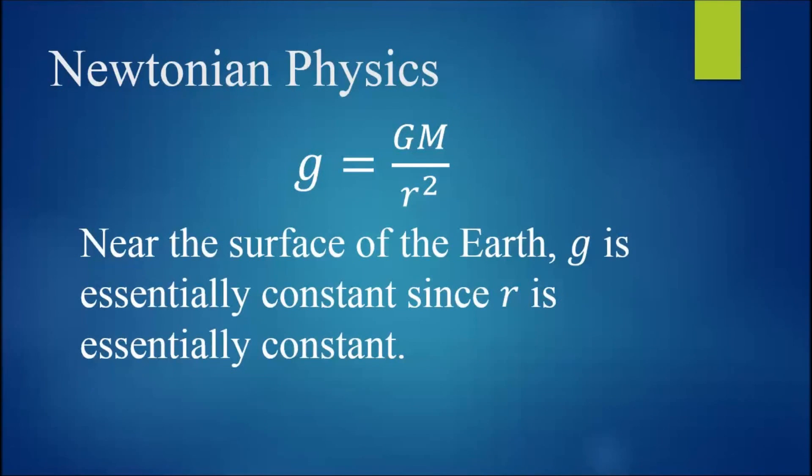Further, the expression predicts that near the surface of the Earth, the acceleration due to gravity is essentially constant since in this case, the distance R between the object and the center of mass of the Earth is essentially constant. Once again, this agrees with experimental observation.